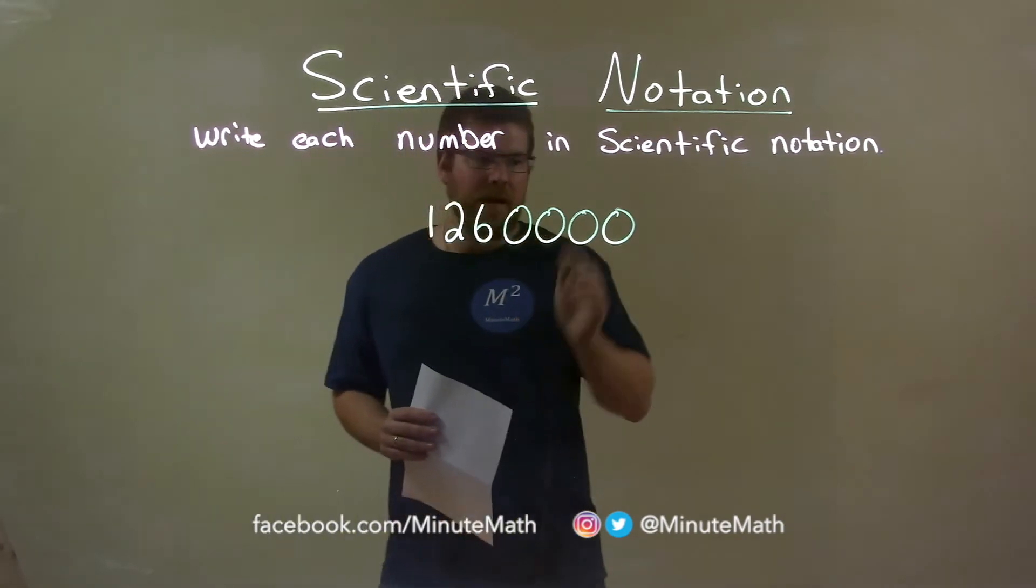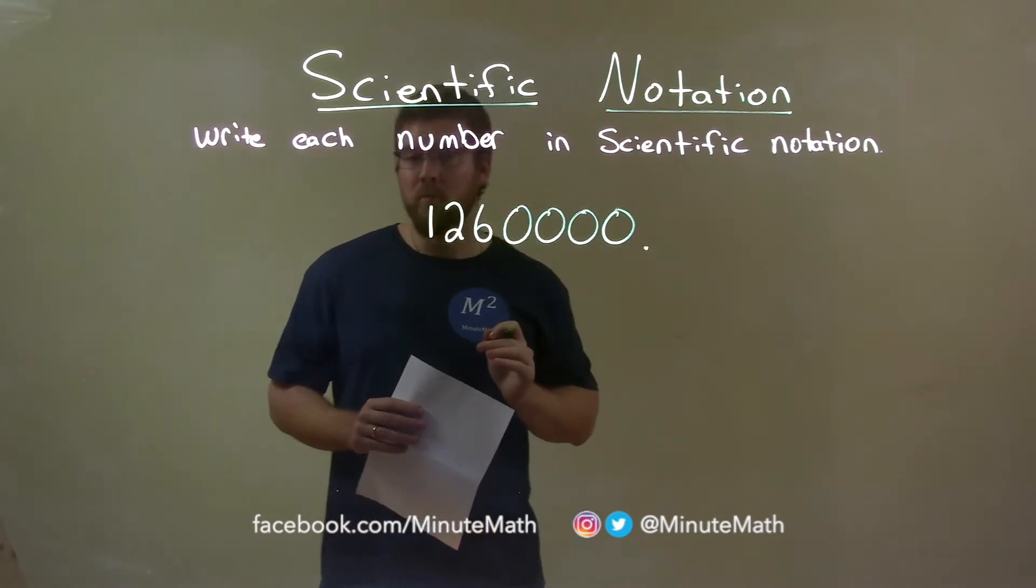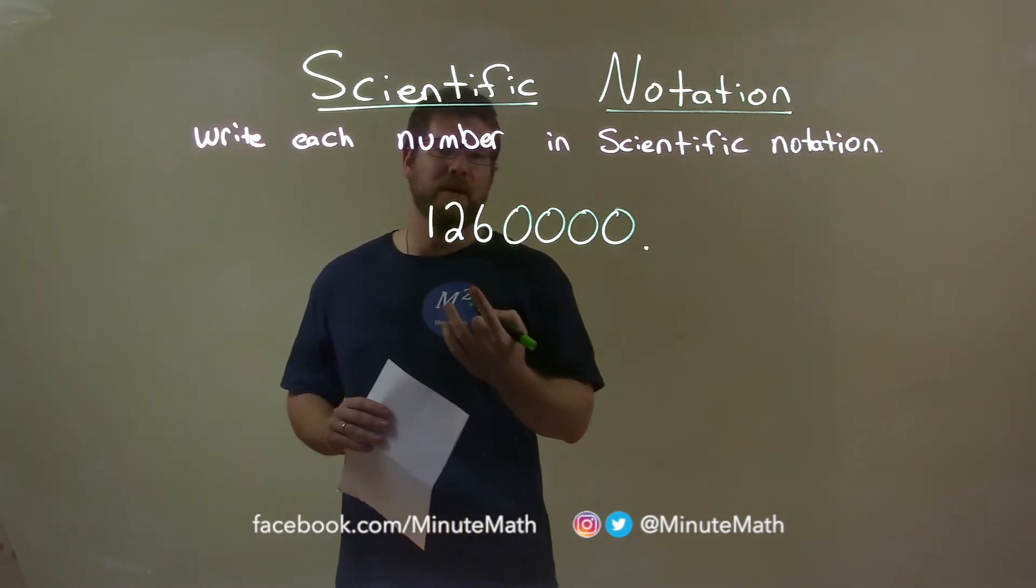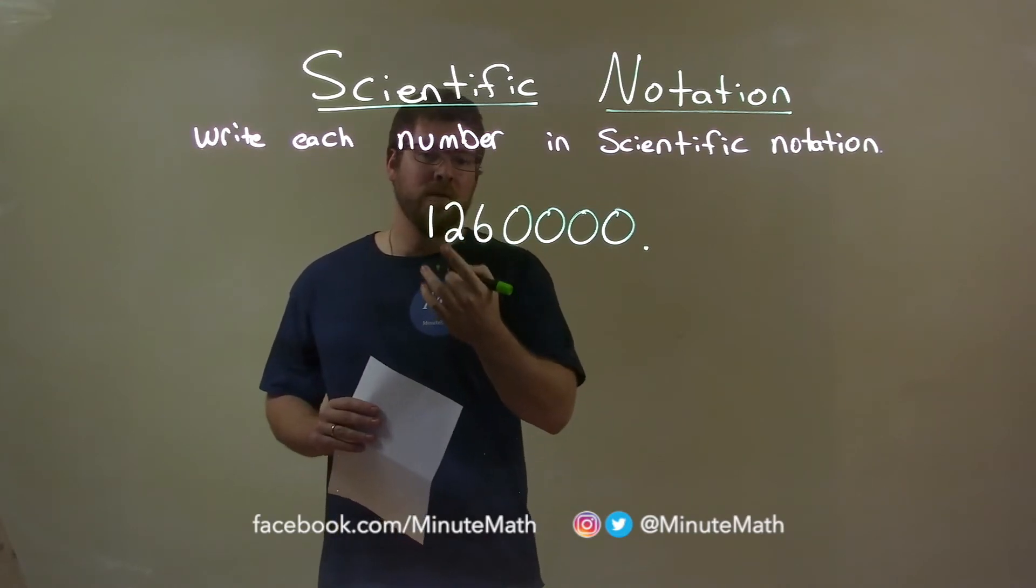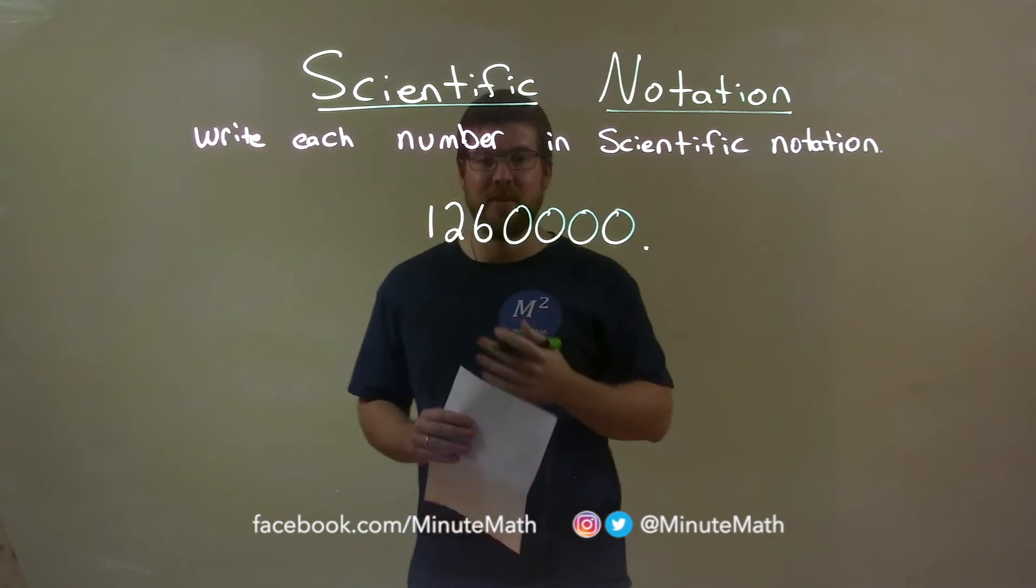Well, a few things to notice. Our decimal place is right there, right? We normally don't write that. We have our whole number here. Now we want to bring that decimal place right before the one. So this one here is in the one's position. That's how we write our scientific notation.